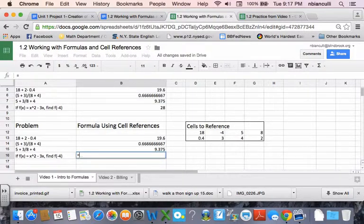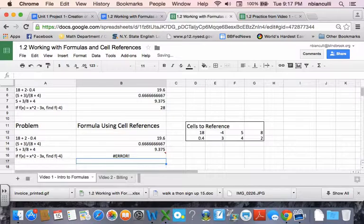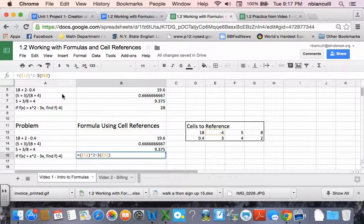And here, I want to do f of X equals X squared minus 3X, I want to find f of negative 4. So I would do parentheses, my negative 4 is in E12, and I want to square that, minus 3 times parentheses, E12. Now, in math, you don't have to put the times symbol, I should just point this out, but if you don't, in Excel, it comes back with an error. So anytime you're multiplying, you need to use that multiplication symbol.